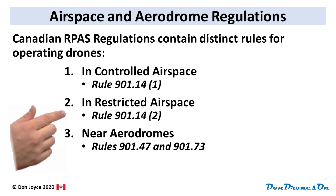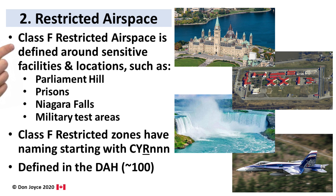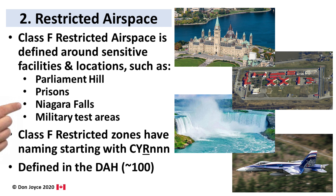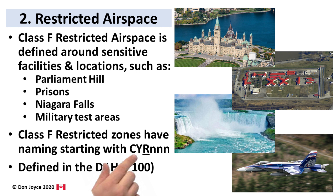Number two area is restricted airspace. Class F restricted airspace is established around sensitive facilities and locations like Parliament Hill, Rideau Hall, prisons and penitentiaries, sites like Niagara Falls and the Confederation Bridge to PEI, as well as military testing zones and weapons ranges. Class F restricted zones each have a number starting with the letters CYR then three digits. There are other Class F zones that are advisory only, and they start with CYA. All these zones are defined in the DAH and shown in the Drone Pilot Canada app. Be aware that not all Class F restricted zones appear on the DJI FlySafe maps — be careful.